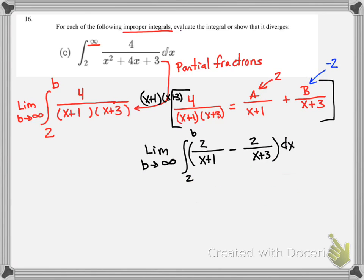And so now that we have found the constants for our partial fraction, we can actually find the antiderivatives. And as we thought before, these are both going to be natural log, so we really have 2 ln absolute value x plus 1 minus 2 ln absolute value x plus 3 evaluated from 2 to b, where b is approaching infinity.